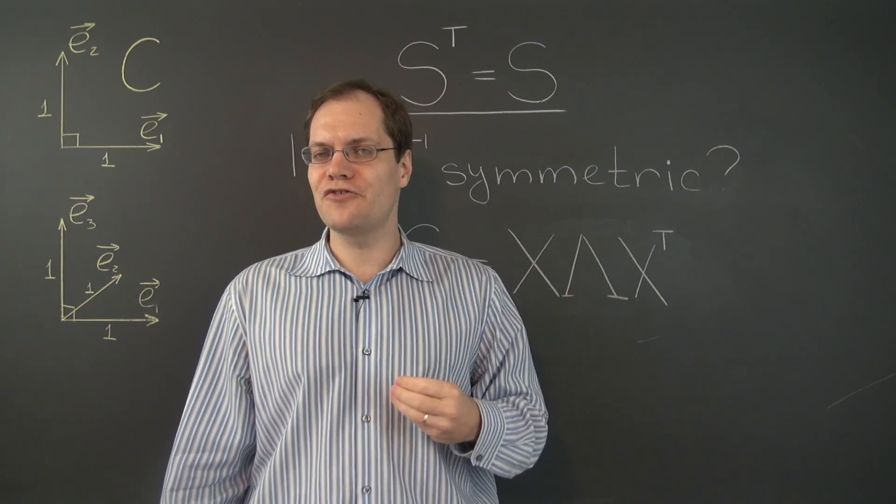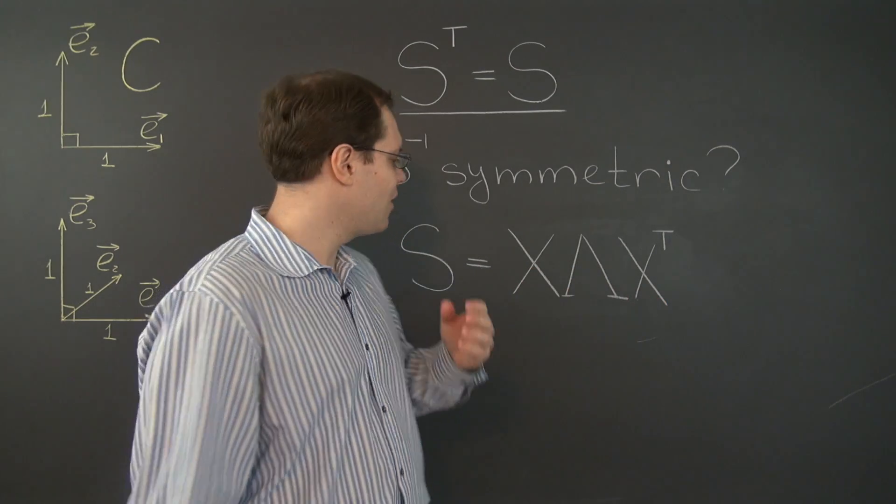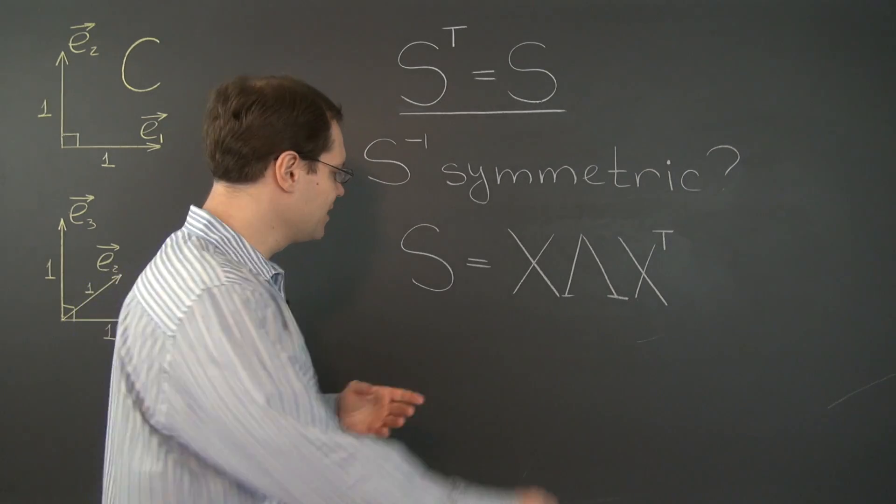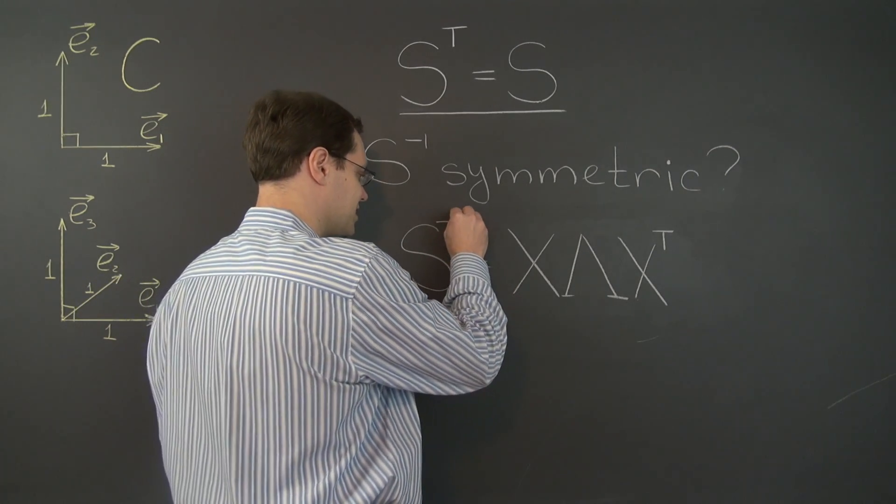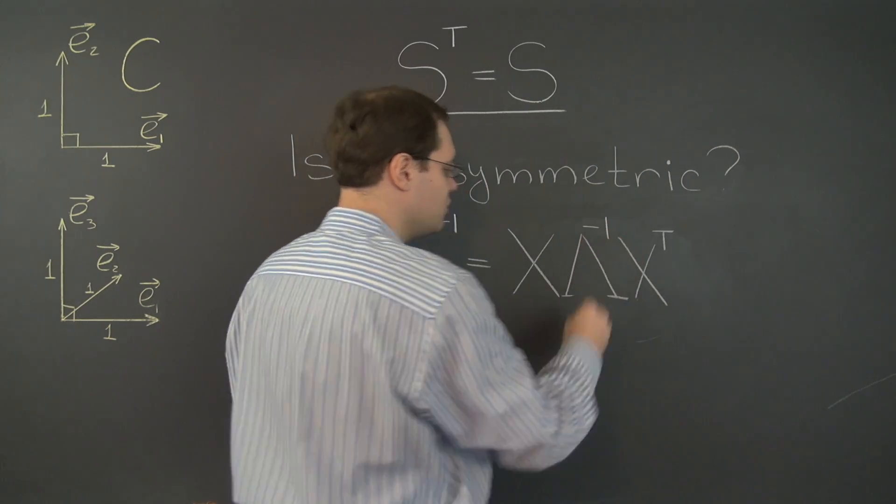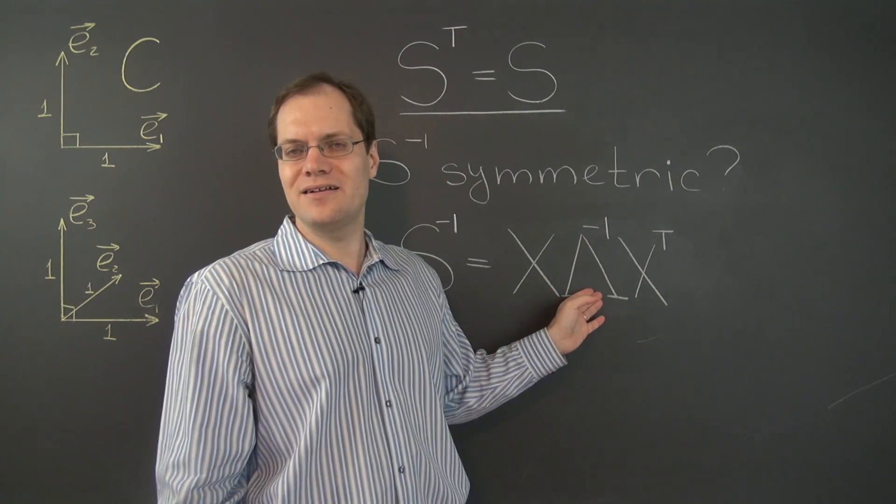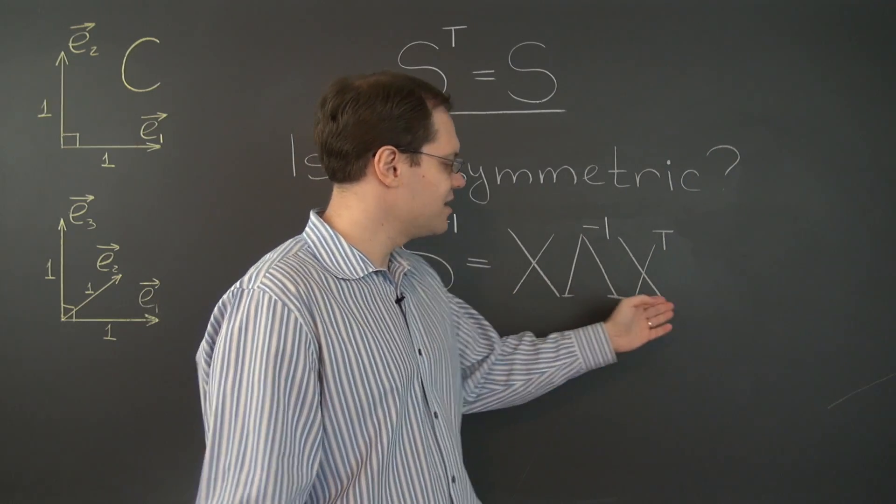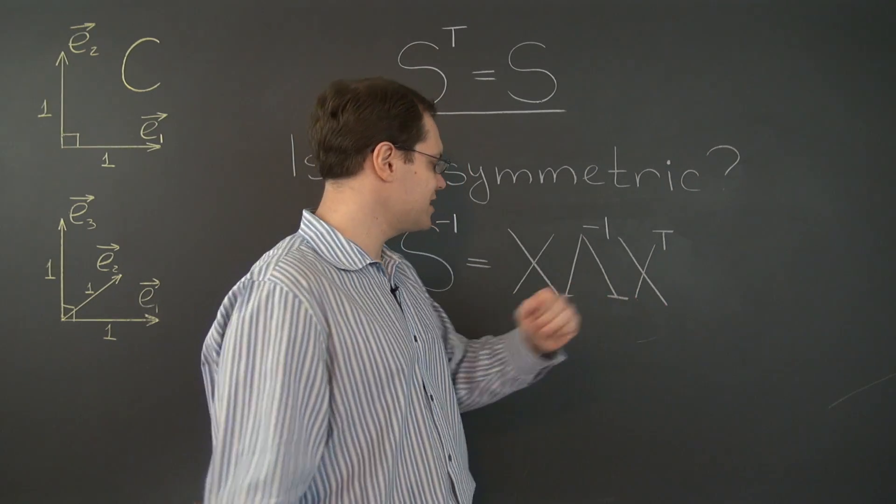And then, as you recall from our lengthy discussions on the eigenvalue decomposition, the inverse of the matrix S has this form. You simply have to invert the middle diagonal matrix. So this is the inverse of the matrix S.